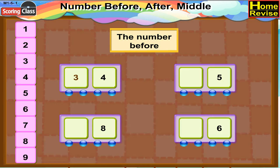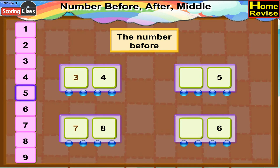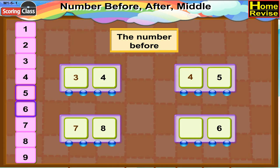Next is number 8. Tell me, what comes before number 8? You are right, it is number 7, so write 7 over there. What comes before 5? You are correct, it is 4, so write 4 in the block. Now last is 6. What comes before 6? Yes, it is number 5, so write 5 in the block.